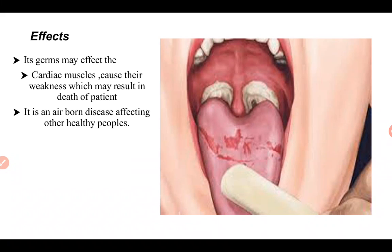Diphtheria is an airborne disease that can affect healthy people. Bacteria are present everywhere in our surroundings — in air, on hands, in water, and even in glaciers. When bacteria are present in the air and a person breathes, they enter through the nose or mouth and can infect other healthy people as well.